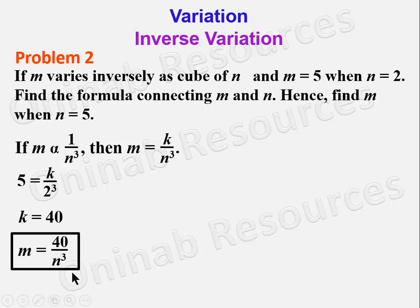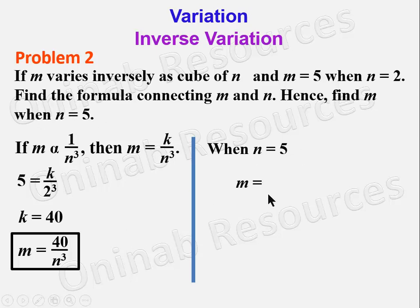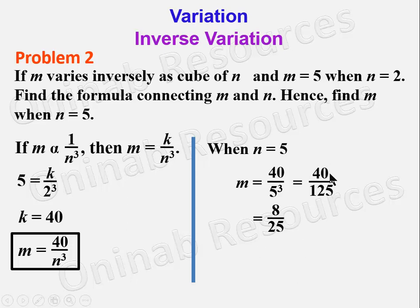We now go ahead to find m when n = 5. Substituting into the formula: m = 40/5³ = 40/125. Dividing, 5 goes into 40 gives 8, and 125 divided by 5 gives 25, so m = 8/25. We can leave our answer as a fraction like this — in this video we'll be leaving it as a fraction.